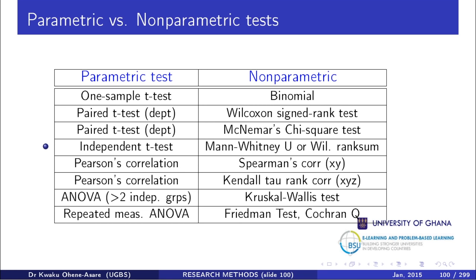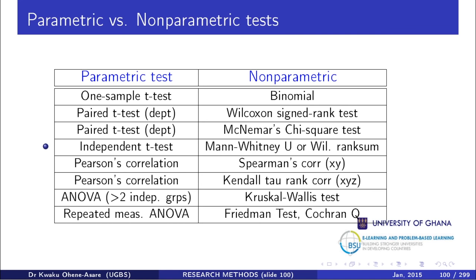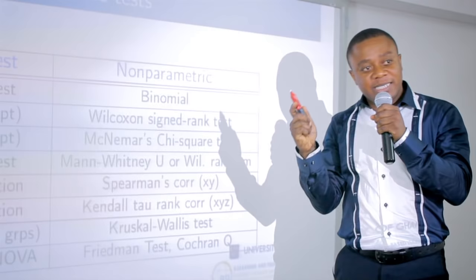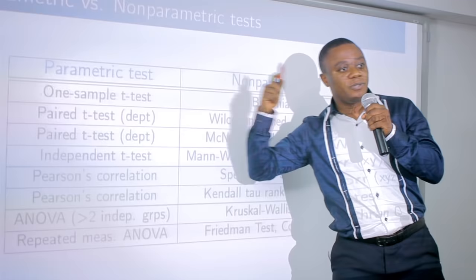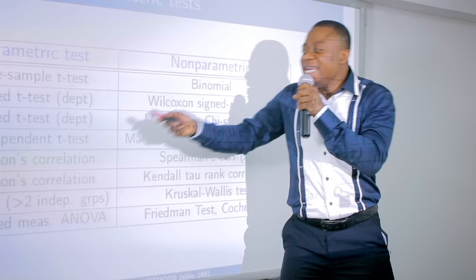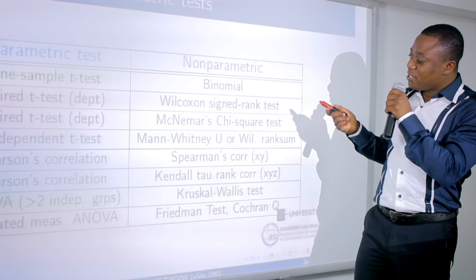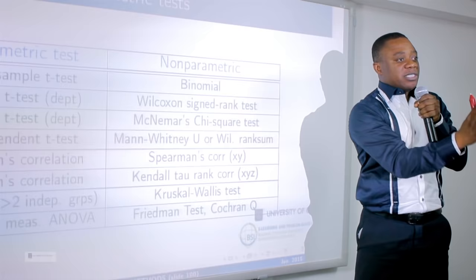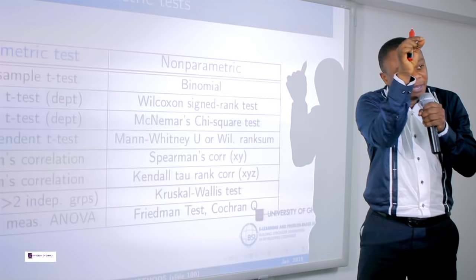Looking at this table we've seen many times: the Wilcoxon signed-rank is the non-parametric analogue of the paired t-test, which assumes normally distributed data. Its non-parametric version is the Wilcoxon signed-rank — we are not doing that today. The independent t-test's non-parametric version is the Mann-Whitney U test, which is what we are doing. We assume the samples are separate and not normally distributed — either skewed right or left.